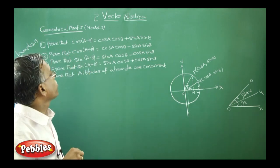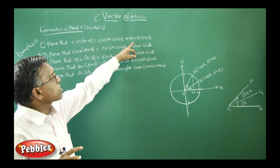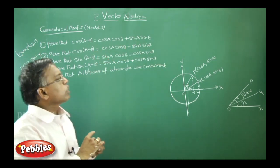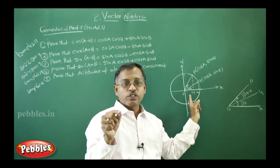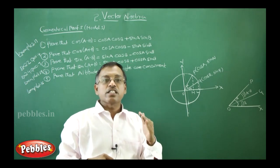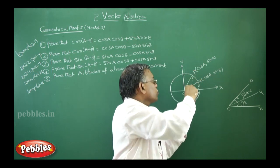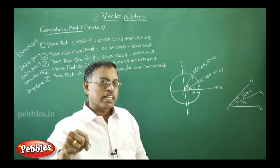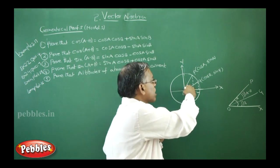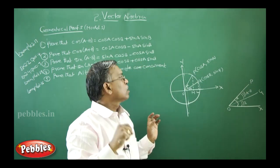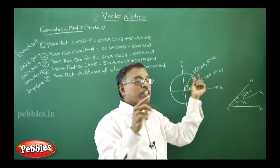Now listen. First one, prove that cos of A minus B is equal to cos A cos B plus sin A sin B. For this, first you need to understand the diagram. See here, this is a unit circle. What is the meaning of unit circle? A circle whose radius is one unit. If it is a minus B problem, whether it is cos of A minus B or sin of A minus B,